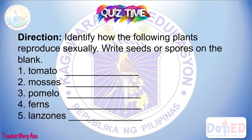This time, get your pen and paper again and take the quiz. Identify how the following plants reproduce sexually — write seeds or spores on the blank.